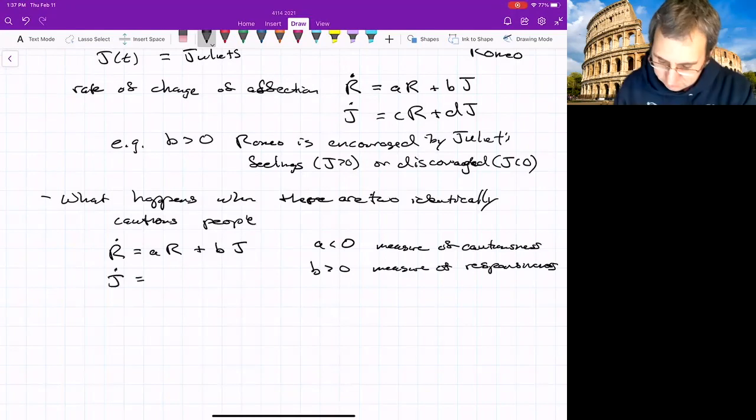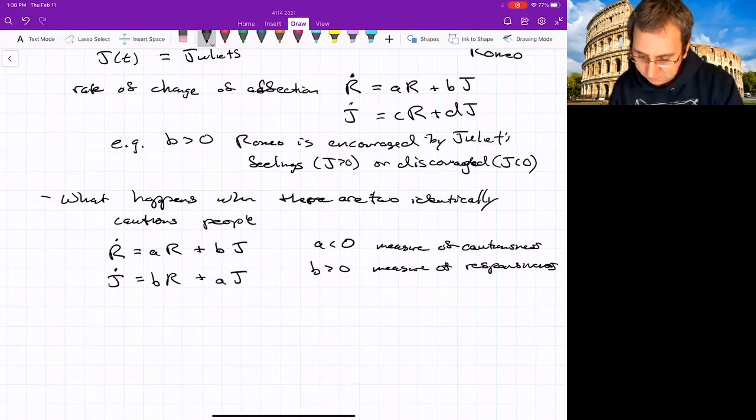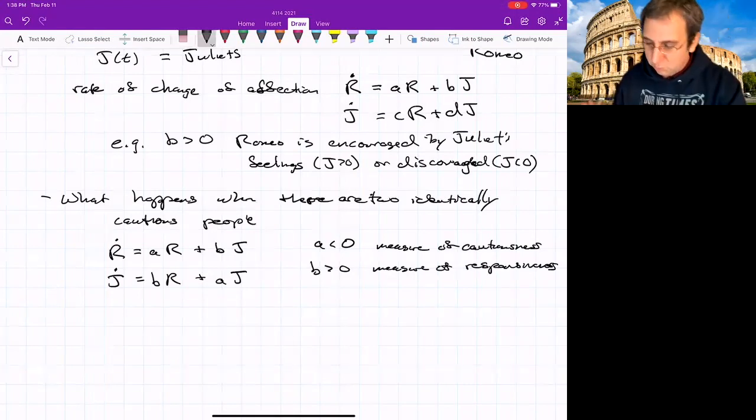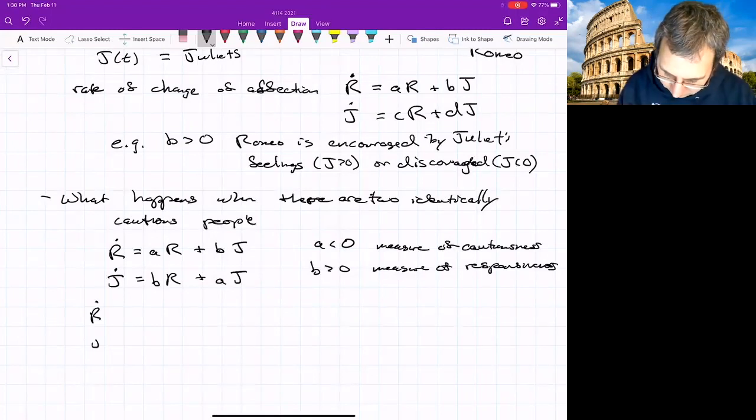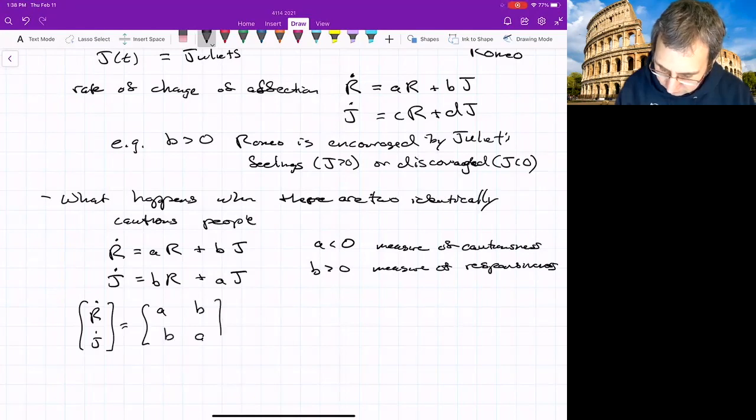Here we'll put the same thing. J dot equals B R plus A J. A, it goes in front of J because that's a measure of J's cautiousness. So they're both equally cautious and responsive. What does that mean? So R dot J dot equals A, B, B, A, R, J.